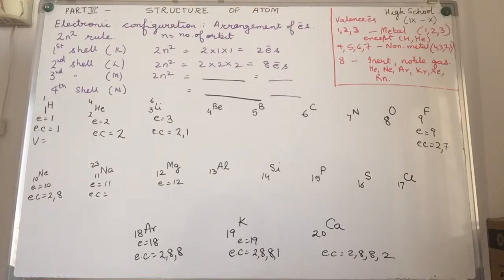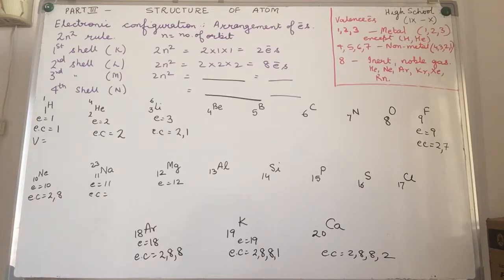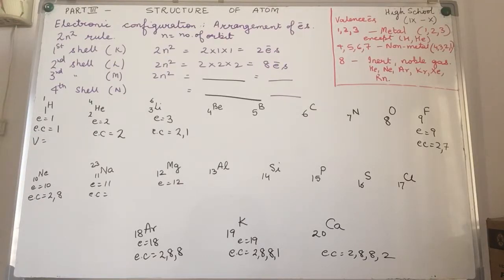Now this cannot be done at random. You cannot have 10 students in one class, then 50 in another, and maybe 2 in the third. We need a certain fixed number — not more than 10 and not less than 5 students in a class. Those are the limitations. When we talk about electrons, these limitations are given according to the 2n² rule.